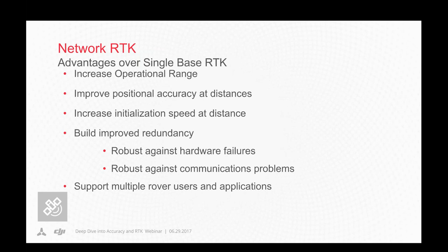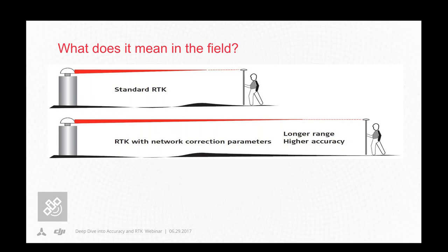This picture really illustrates the difference between network RTK and standard RTK. With standard RTK, you can work at shorter distances before getting into error in the solution. With network RTK correction parameters, you can stretch this to longer ranges and higher accuracy — keeping that error budget under control.